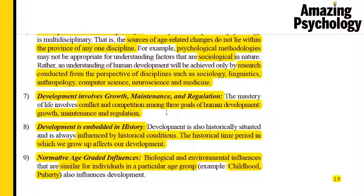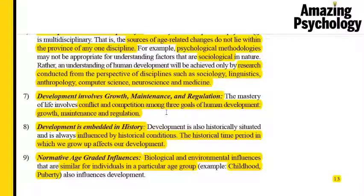Development involves growth, maintenance, and regulation — three different stages. You grow in spurts, you have to maintain the growth, and you have to regulate the functions within the body. There is a constant dynamic conflict and competition between these three forms, necessary for proper human development. If one is out of balance — for example, if you're maintaining and regulating but not growing, or growing and maintaining but without proper hormonal regulation — development doesn't happen properly. Healthy development requires a balance between all three.